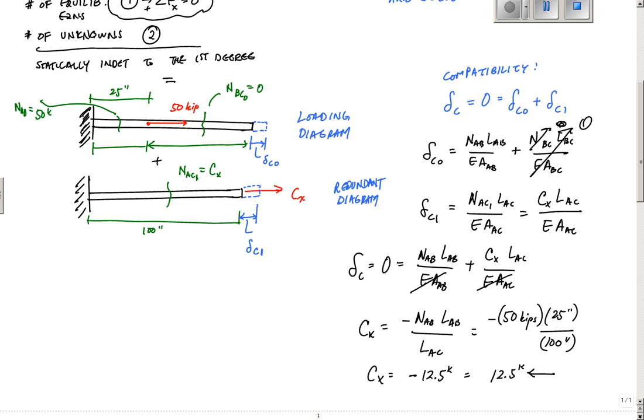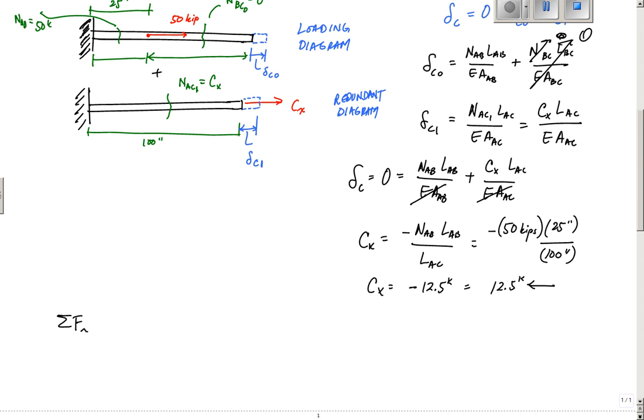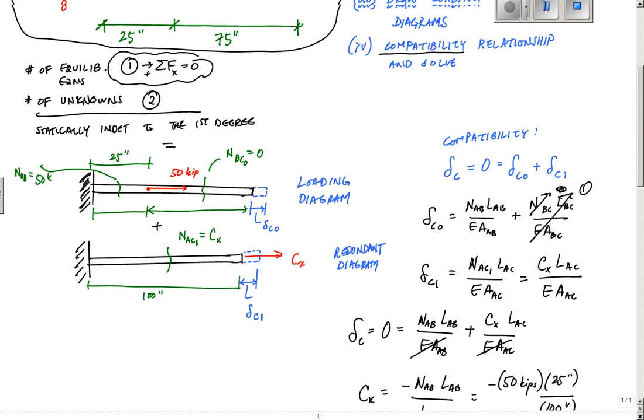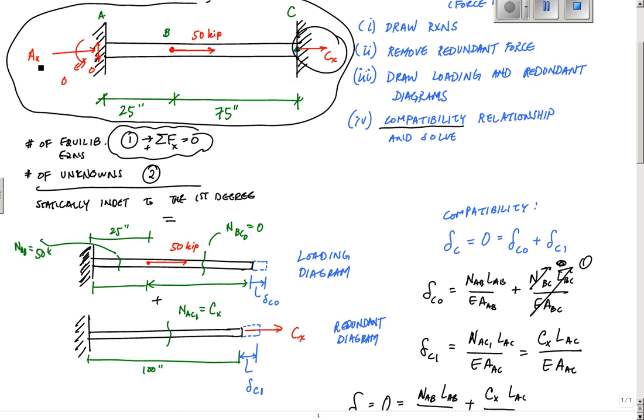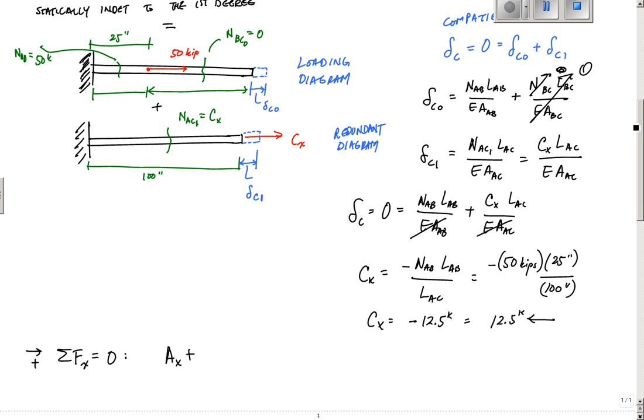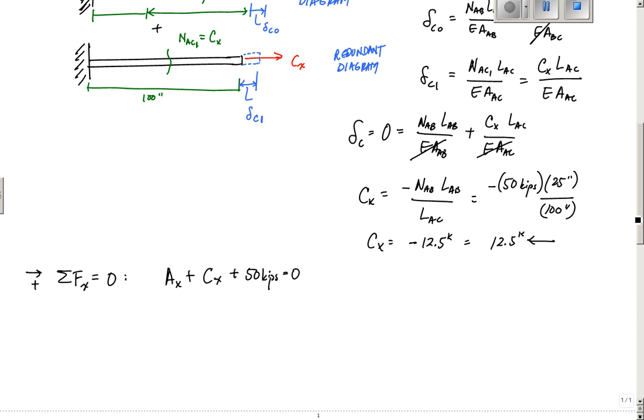And now if I wanted to find AX, all I have to do is sum of the forces in the X equals zero. Go this way to the right. I would have AX plus, I don't want to confuse things here. I'm just going to make my equilibrium equation look like this drawing right here. I want my equation to reflect this drawing up here, right here. So I have essentially AX plus CX plus 50 kips equals zero. And then because I know that it's negative 12.5 or opposite of that right here, I'm going to put this AX minus 12.5 kips plus 50 kips equals zero. And that tells me that AX equals negative 37.5 kips, which means it's 37.5 kips to the left.